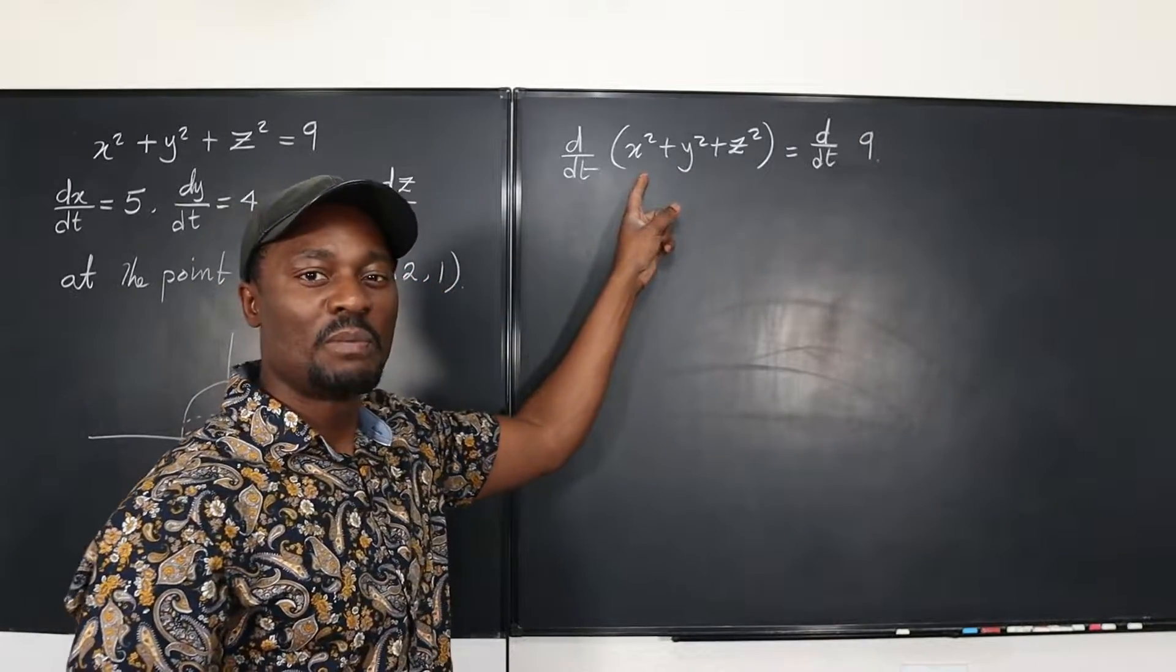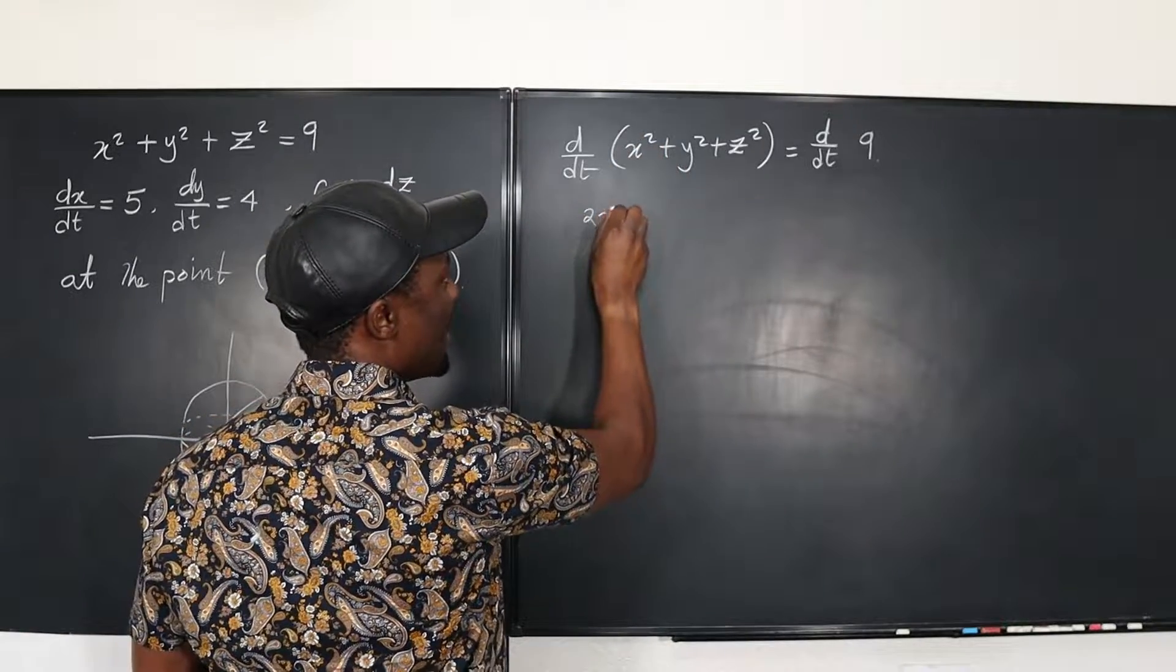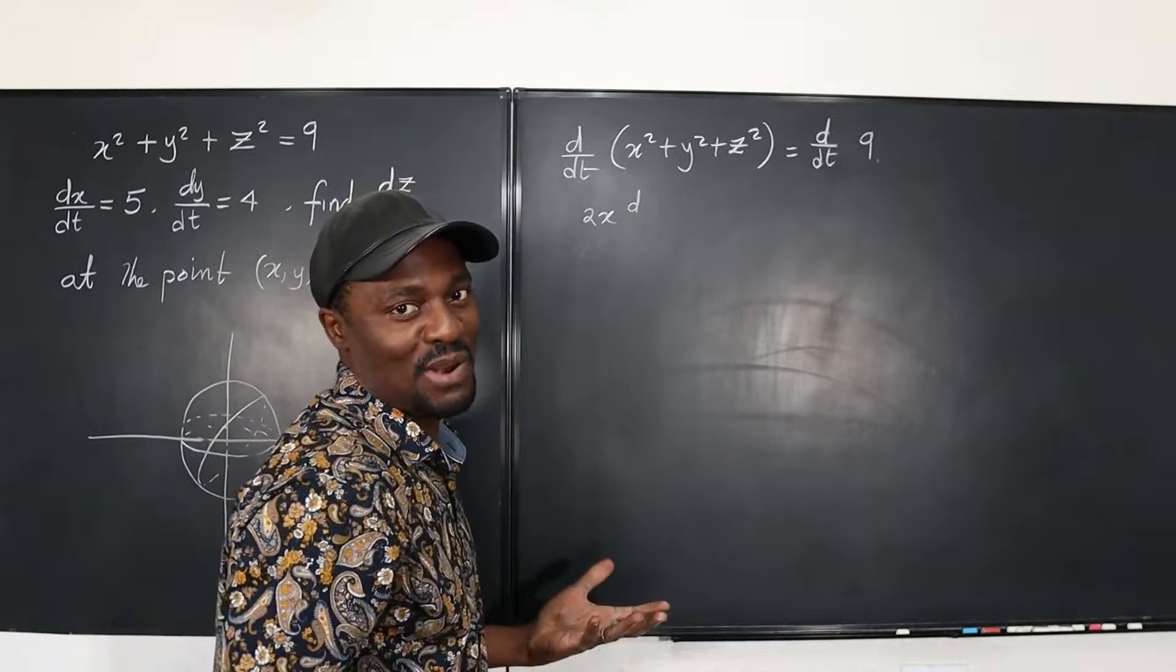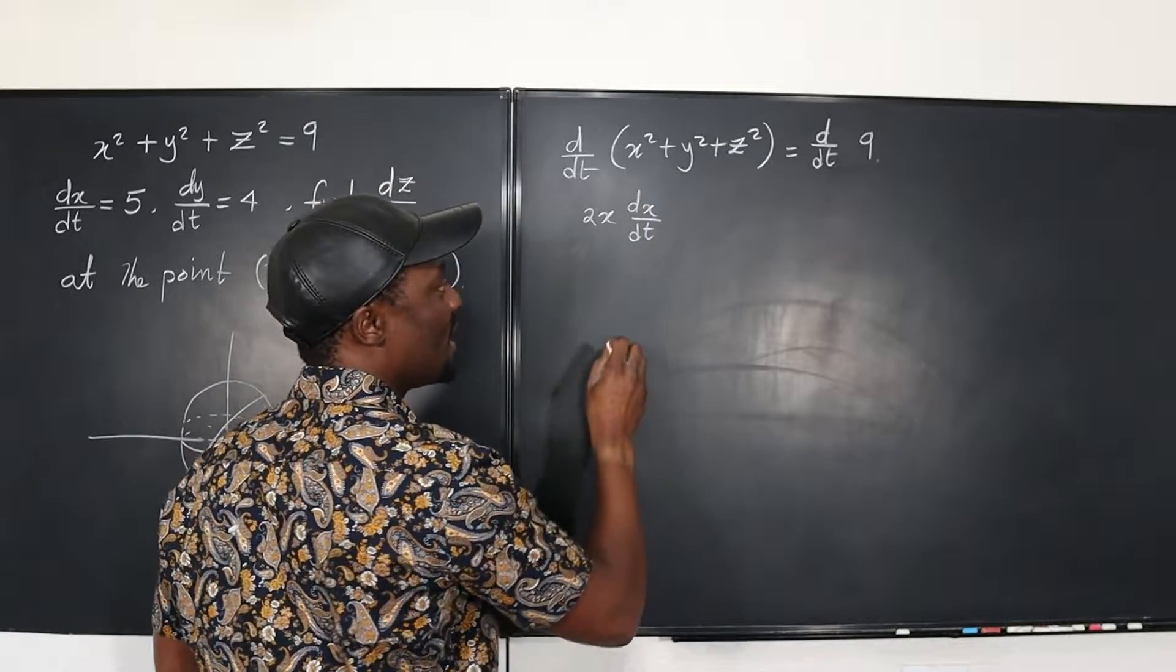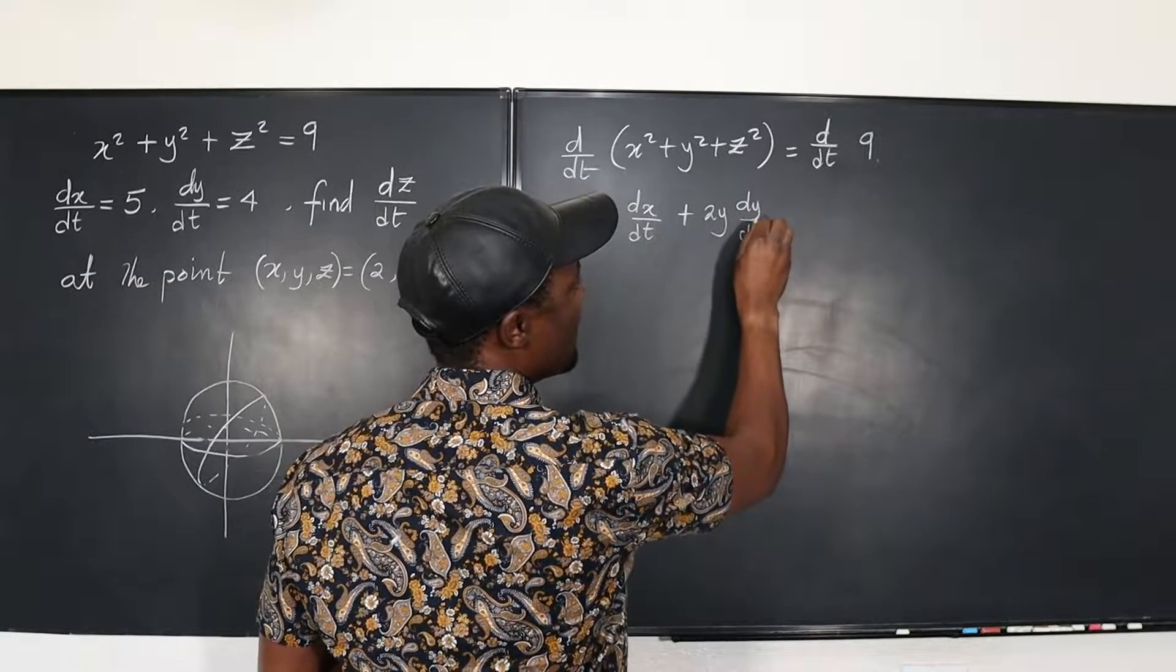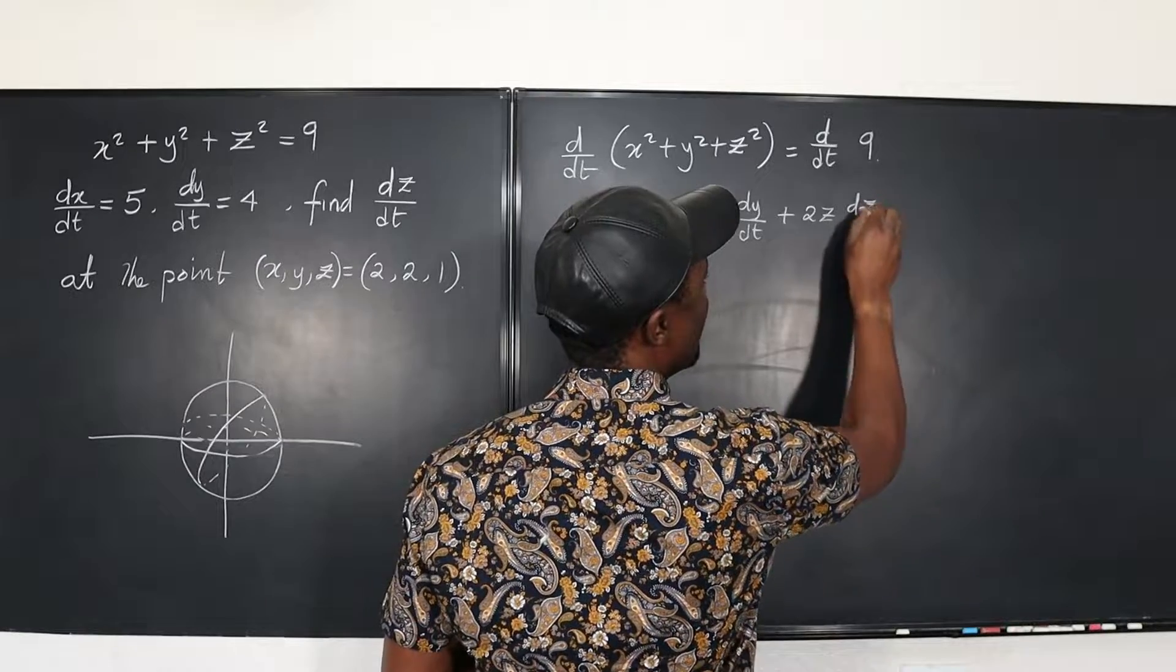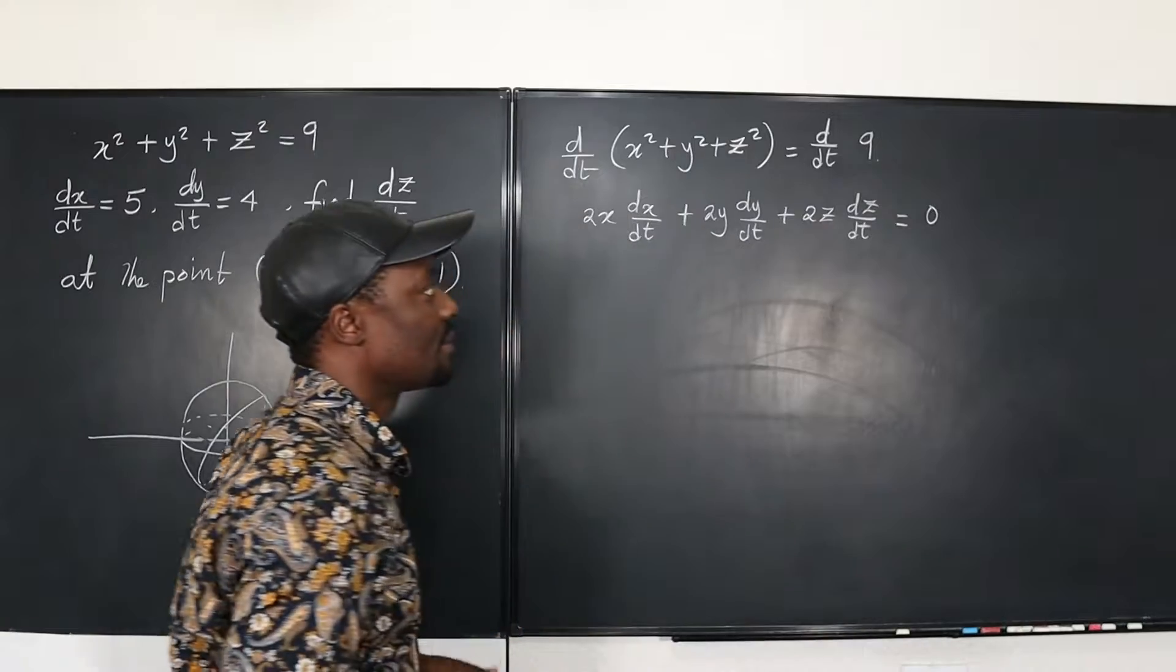Well here, we have to do implicit differentiation, which means you take the derivative of this, which is going to be 2x dx/dt, or what we'd say x prime. But because it's not just x, we can't say x prime this time. We're going to say dx/dt. Plus, this is going to be 2y dy/dt. And this is going to be - sorry, not equal to - plus 2z dz/dt. And on the right-hand side, what do we get? We get zero. We're done. That's the calculus part.